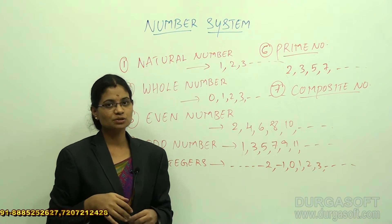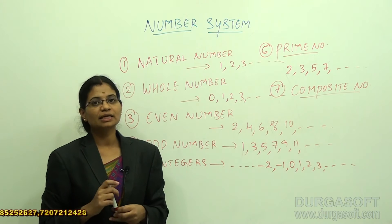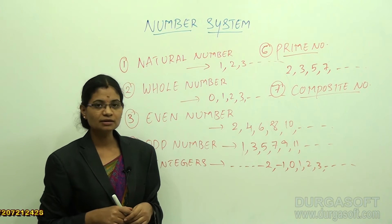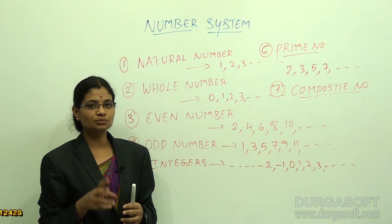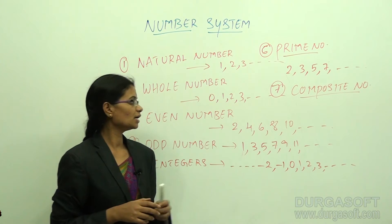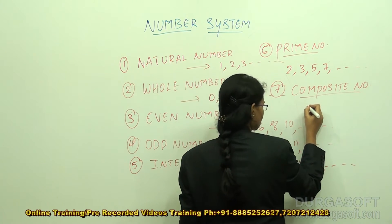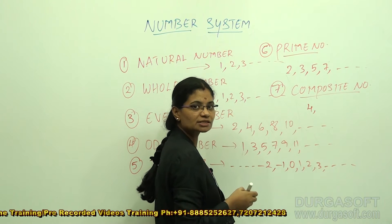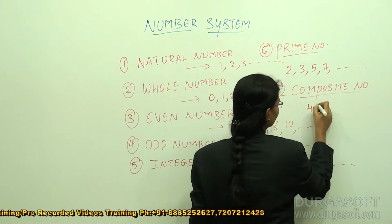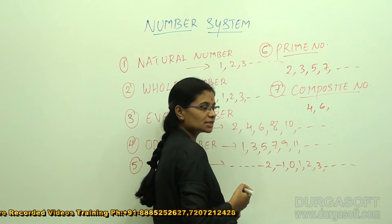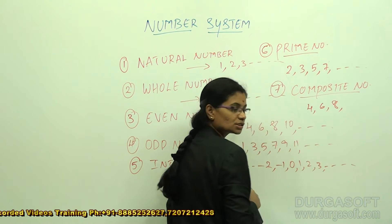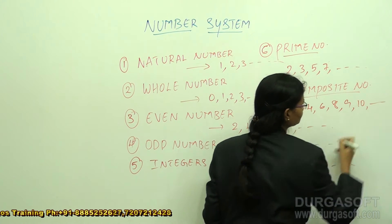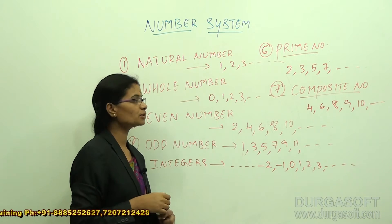Composite numbers are the reverse of prime numbers — they are numbers which have more than two factors. For example, 4 has factors 1, 2, and 4. The number 6 has factors 1, 2, 3, and 6. Numbers like 8, 9, and 10 are also composite numbers.